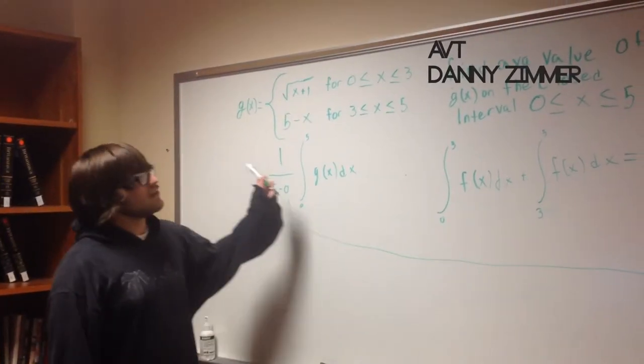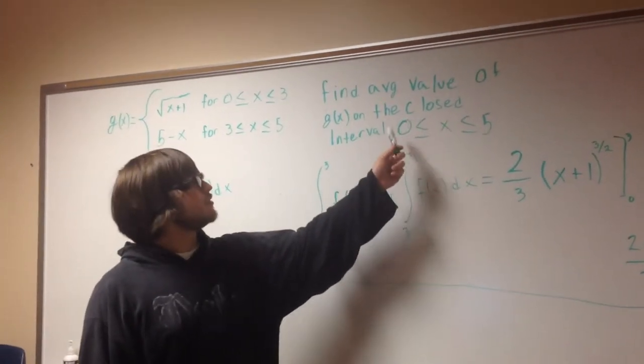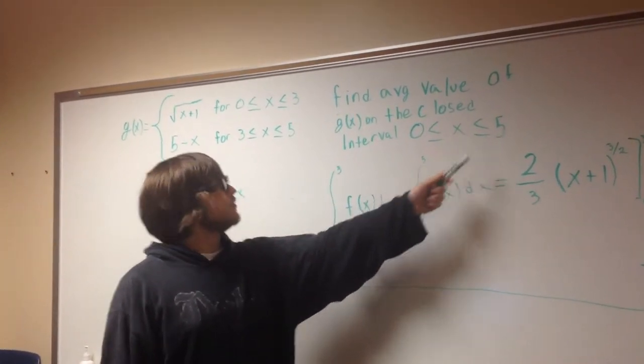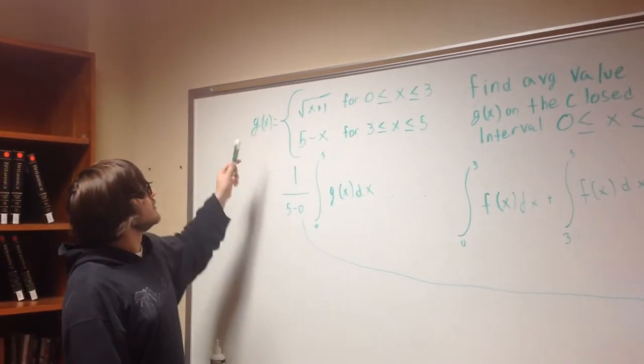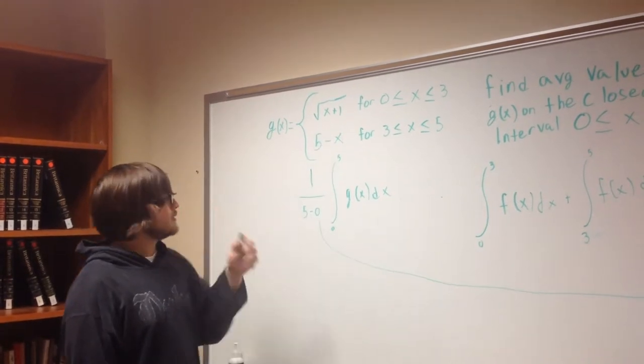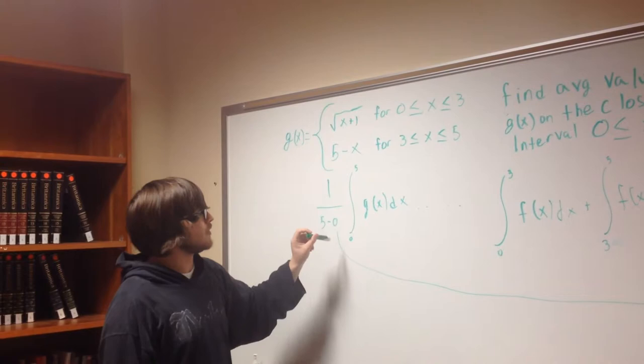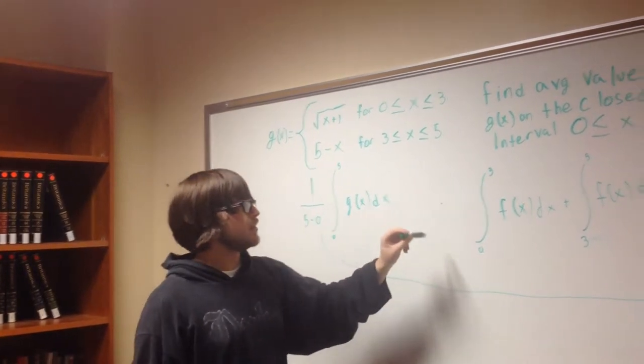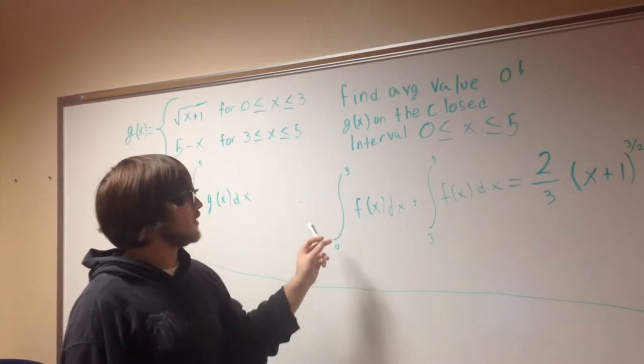Oh, and this is a spider. Alright, so this is the average value problem, and it's finding the average value of g of x on the closed interval zero to five. What makes this problem different than a normal average value theorem is that there is a piecewise function.